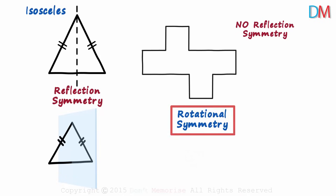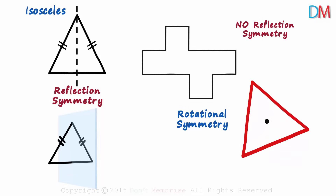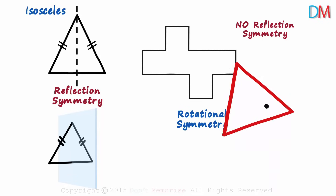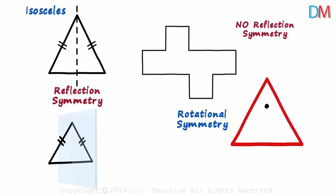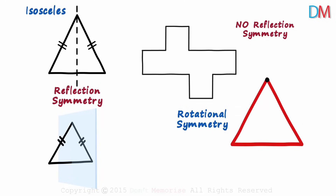Rotational symmetry — what does that mean? As the name suggests, let's try rotating the figure about its center point. What does rotating about a center point mean? Take the example of this triangle. If we rotate it about its center point, it will rotate like this. If we rotate it about another point, it will rotate like this. And if we rotate it about one of its vertices, it will rotate like this. The shape will rotate differently depending on the point around which it is rotated.